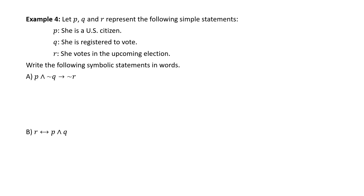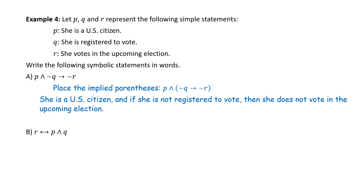Example: Let P, Q, and R represent the following statements. P: she is a U.S. citizen. Q: she is registered to vote. R: she votes in the upcoming election. Write the following in words. Part A: P ∧ ∼Q → ∼R. With no parentheses, the implication is more dominant than AND, so we place implied parentheses around ∼Q → ∼R. In English: 'She is a U.S. citizen, and if she is not registered to vote, then she does not vote in the upcoming election.'